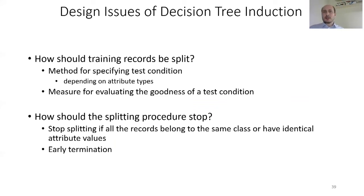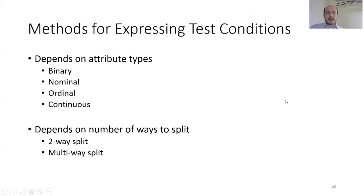What are the design issues in decision tree induction? The first question is how should training records be split. The method for specifying the test condition depends on attribute types and a measure for evaluating the goodness of a test condition. How should the splitting procedure stop? We need stopping criteria if all records belong to the same class or have identical attribute values, with early termination as another option. Attribute types can be binary, nominal, ordinal, or continuous, and we can have two-way or multi-way splits.